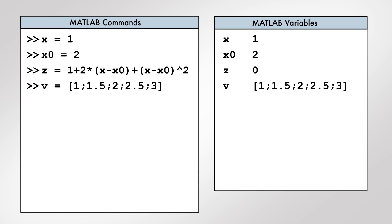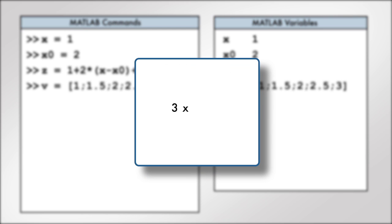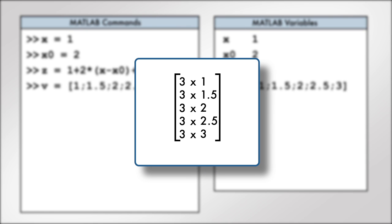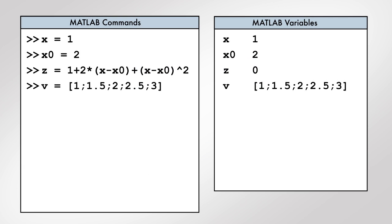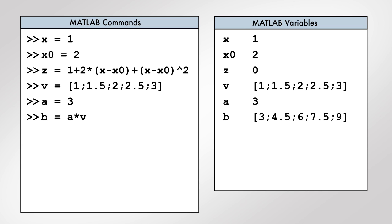Consider the vector v. Let's see a few calculations that involve vectors like v. A scalar and a vector can be multiplied together so that each element of the vector is multiplied by the scalar. These commands multiply each element of the vector v by 3 and store the result in the variable b.